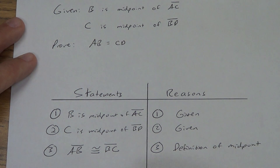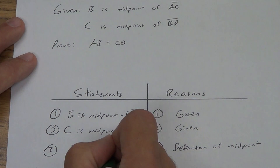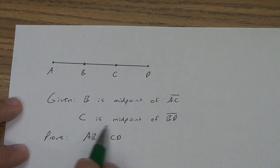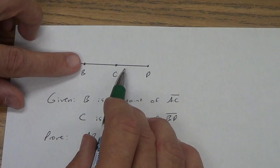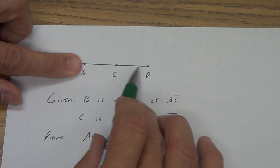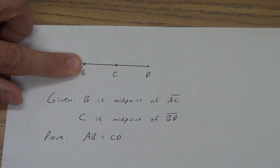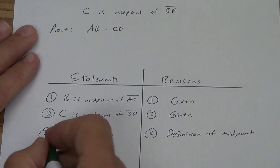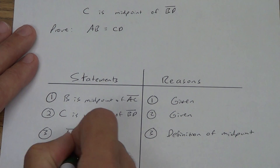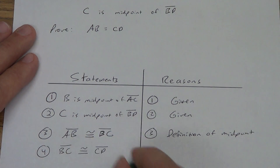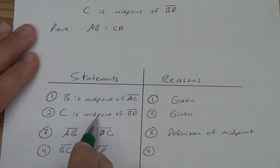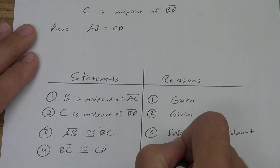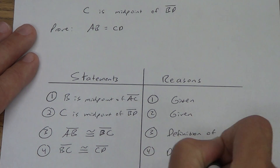Let's go back to our other given: C is the midpoint of BD. So if C is the midpoint of BD, we're not worried about the other section — just this part. What do we know? BC is congruent to CD. Let's write that down: BC is congruent to CD. Why? It has to do with this idea of midpoint — definition of midpoint.